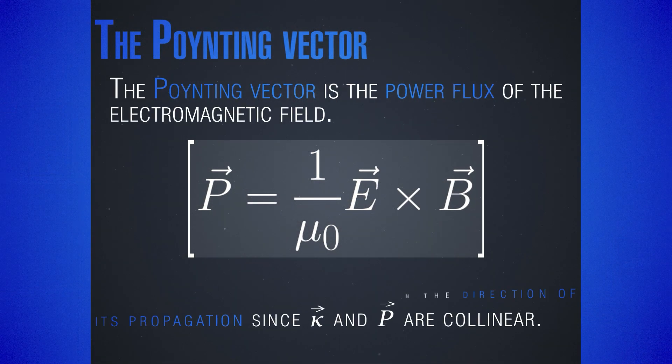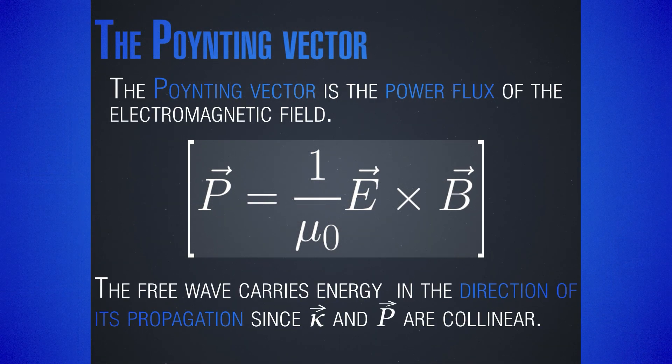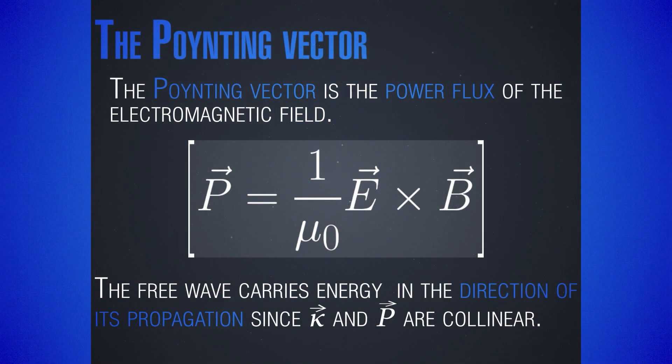Why is this important? At this point we can define something very central to antennas and to the power of electromagnetic waves: the Poynting vector. It turns out that if we take the cross product E cross B, we end up with a vector which points in the direction of propagation. If we divide by the constant mu zero, the new vector — denoted as S, the Poynting vector — has the meaning of power flux. This tells us that as the electromagnetic wave propagates, the electric and magnetic fields are mutually orthogonal and orthogonal to the direction of motion, while the energy they carry is directed along the direction of motion.